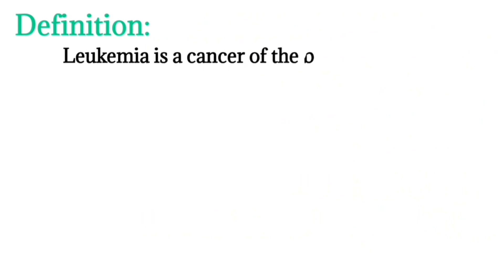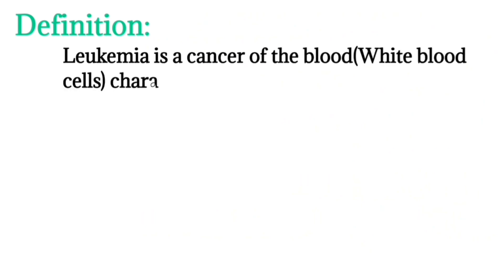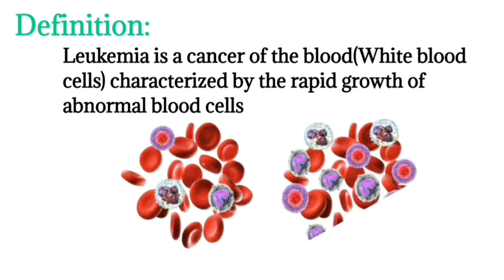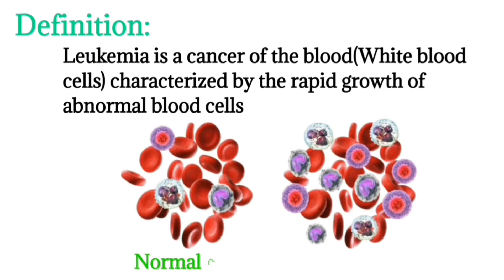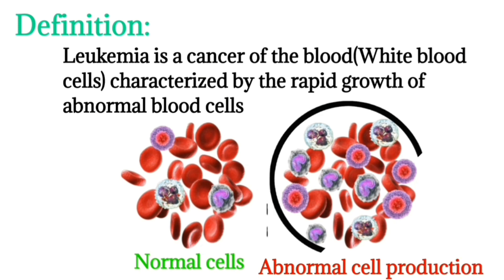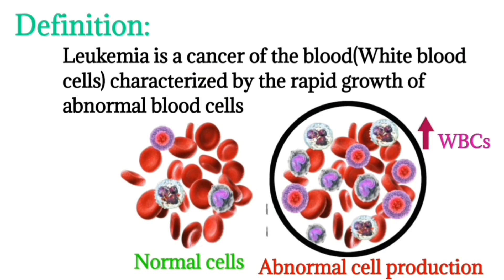First, we will discuss leukemia. Definition: leukemia is a cancer of the white blood cells characterized by rapid growth of abnormal cells. There is both normal and abnormal cell production, which increases white blood cells.